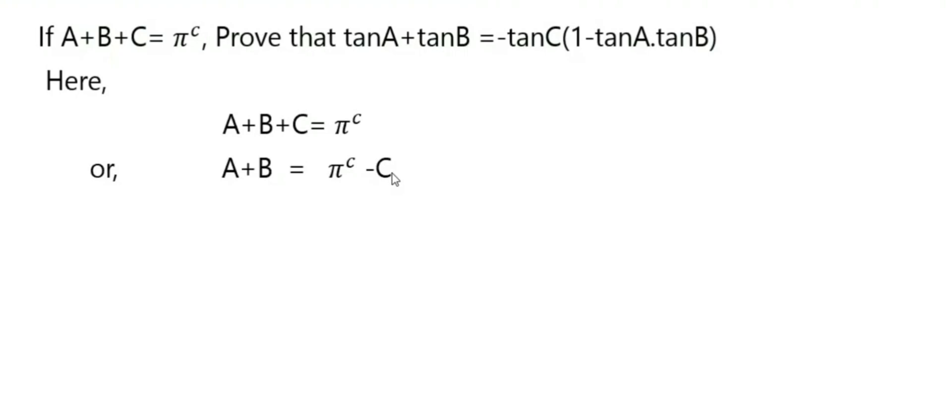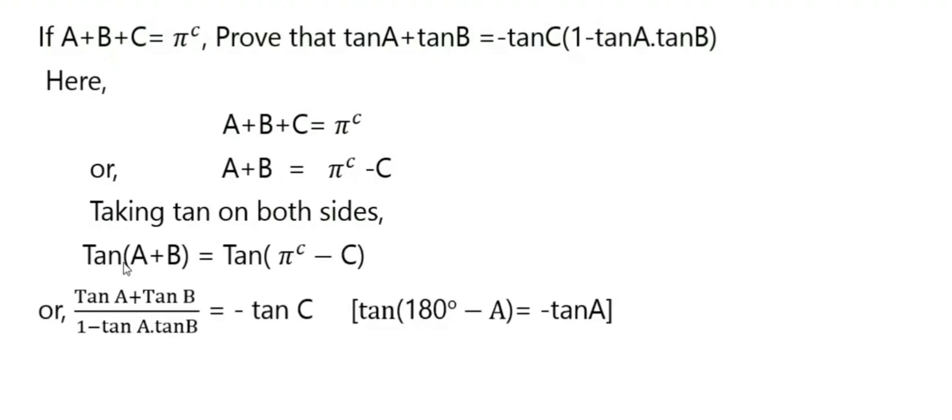Now we'll take tan on both sides. We'll take tan on the left-hand side, also we'll take tan on the right-hand side. After doing this we can write that tan(A + B) equals tan(π radians - C), because we have taken tan on both sides and we applied the formula.